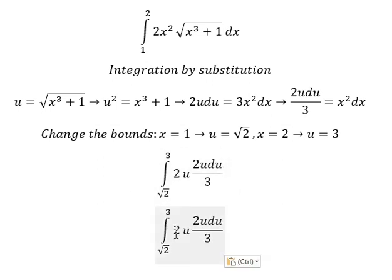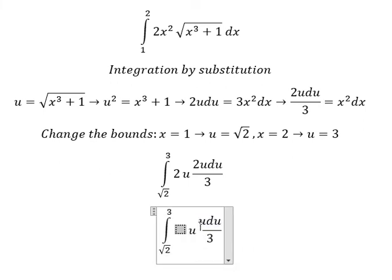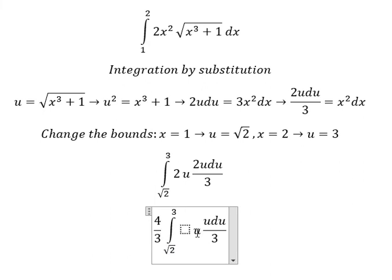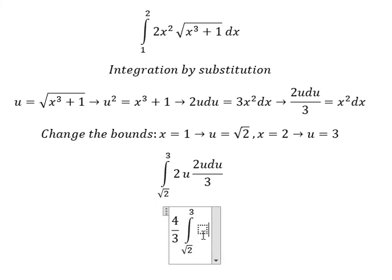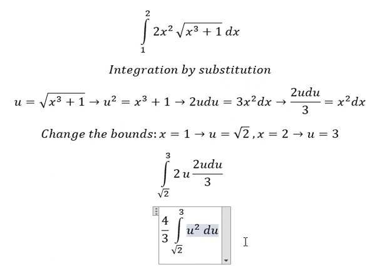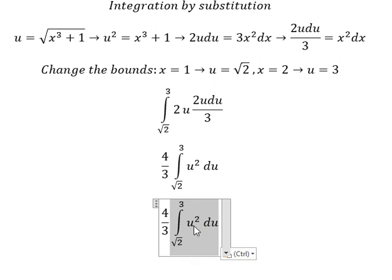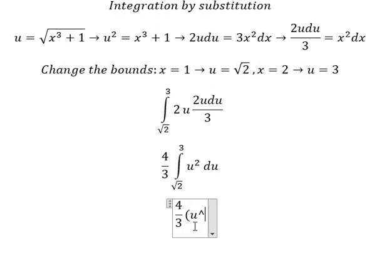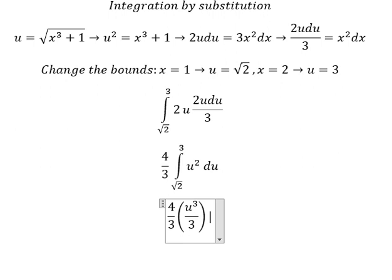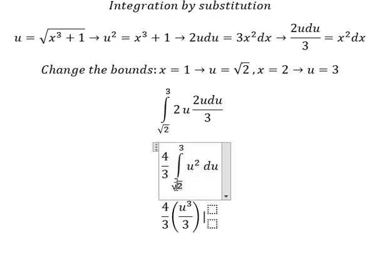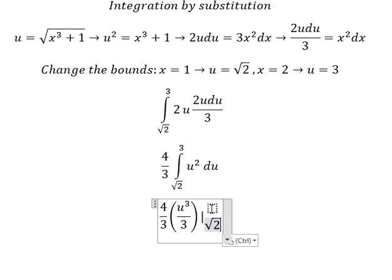Two divided by three gives us two-thirds, and we have the integral of u squared du. The integration of u squared gives us u to the power of three over three, with bounds from the square root of two to three.